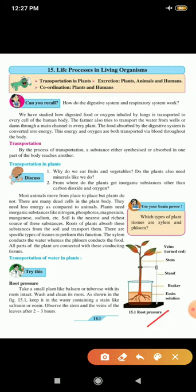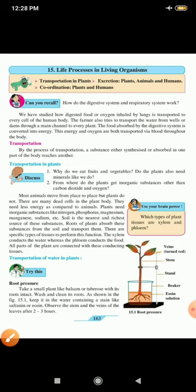In this picture you can see, eosin solution is there in the beaker. The plant is attached with the help of a stand. The stem, the leaves, and the veins - you can see everything is turned red. Eosin is red in color, so it has turned all red.